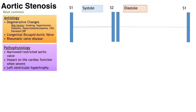The stenosis restricts forward flow of blood out of the heart and causes increased pressure within the left ventricle, resulting in left ventricular hypertrophy. The heart muscle must increase its contractile force to overcome the narrow, restricted exit at the aortic valve. Left ventricular hypertrophy is a pathophysiological adaptation, but as the stenosis worsens this adaptive mechanism fails, wall stress increases, systolic function declines and eventually the heart will fail.